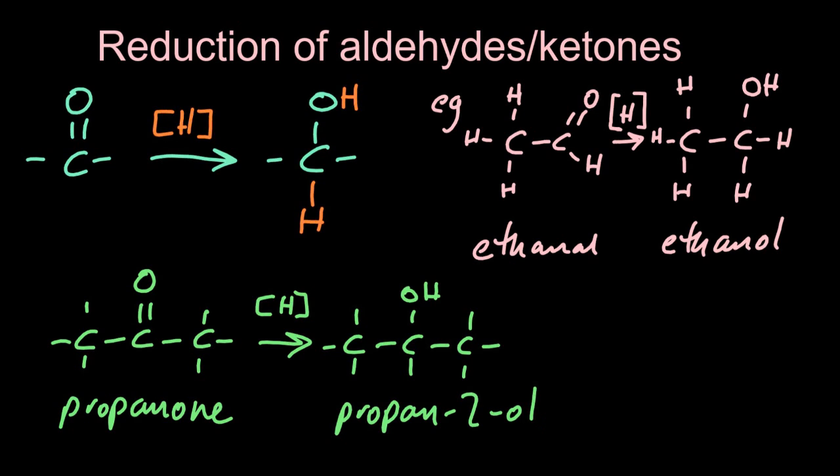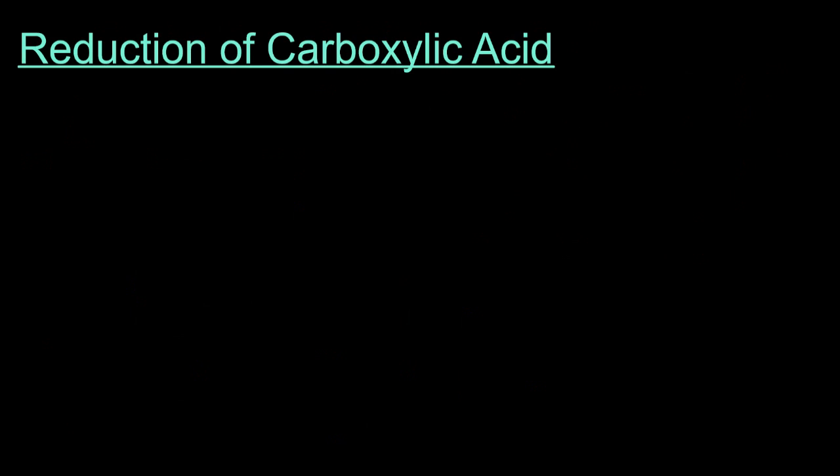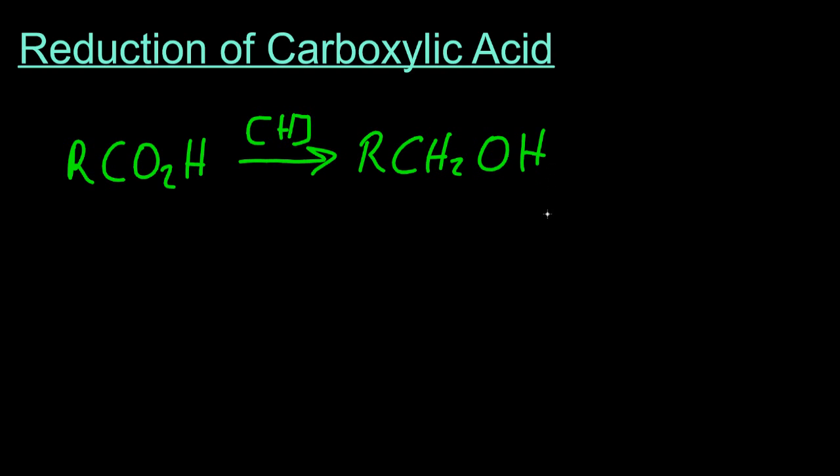What about the reduction of a carboxylic acid? I hear you cry. What about it? Okay, so let's do it in the shorthand format where R is methyl, ethyl, propyl, butyl, whatever. So the carboxylic acid is reduced to a primary alcohol. Never done that before either.